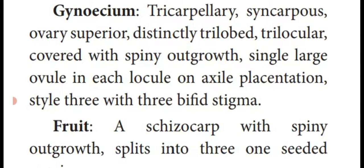Gynoecium: three carpels — tricarpellary, fused together — syncarpous. Ovary at the top — superior. It contains three lobes — trilobed; three chambers — trilocular — covered with thorn-like or spiny outgrowth. A single large ovule present in each locule on axial placentation. The style is three with three bifid stigmas — meaning three stigmas, each divided into two — giving six-branched appearance, but totally three styles.